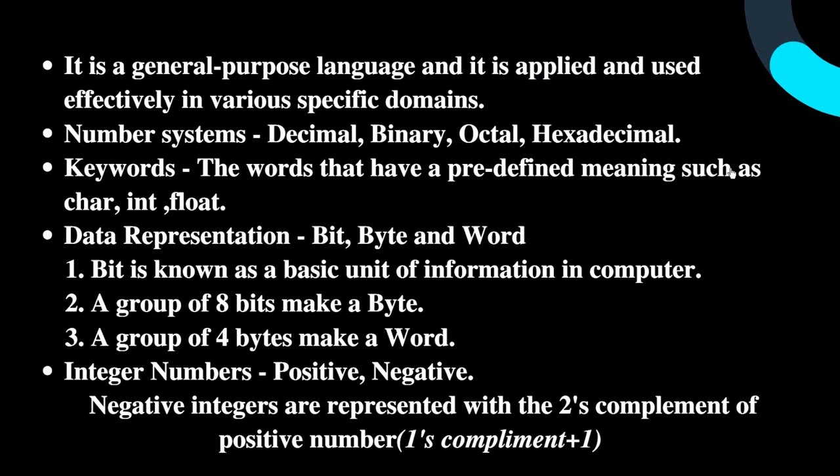Integer numbers can be positive or negative. Integers are basically a data type available in C. Negative integers are represented with the two's complement of a positive number — that is, one's complement plus one.